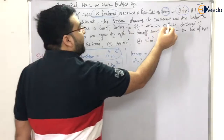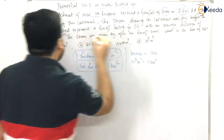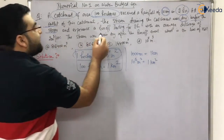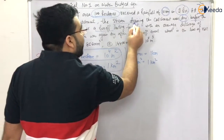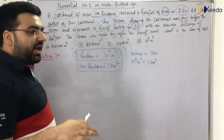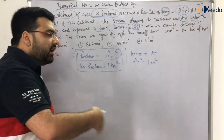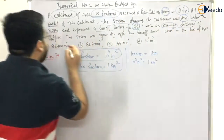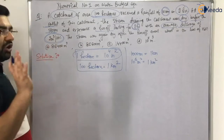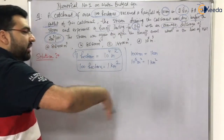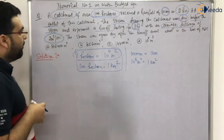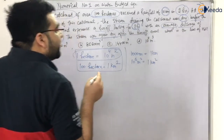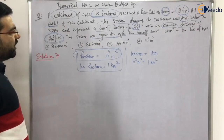At the outlet of this catchment, the stream draining the catchment was dry before the storm. After the rainfall came, the stream experienced a runoff lasting for eight hours with an average discharge of 0.5 m³/s. After the runoff, the stream was again dry. What is the loss of water?